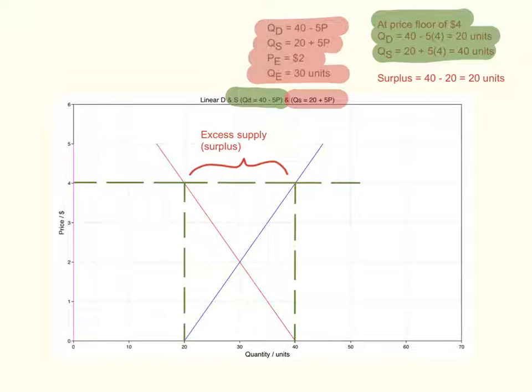Now to calculate the surplus—a surplus is basically excess supply. You take the new quantity supplied after the price floor has been imposed and subtract from it the new quantity demanded. So 40 - 20 gives you a surplus, or excess supply, of 20 units.